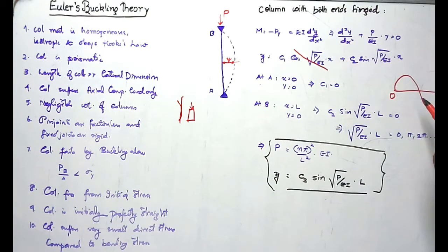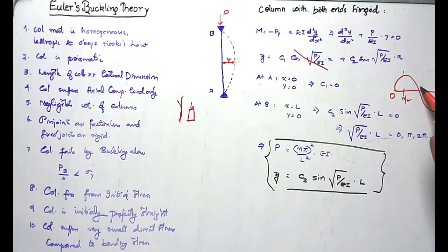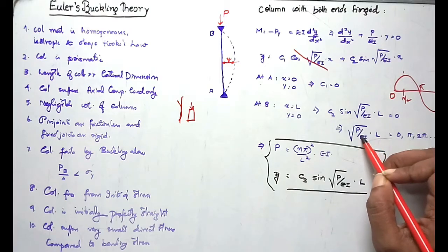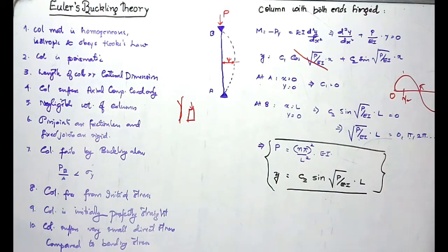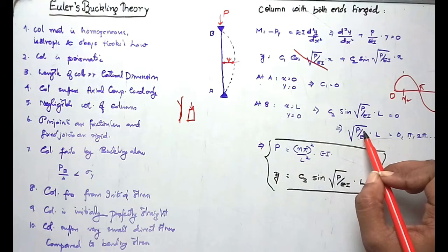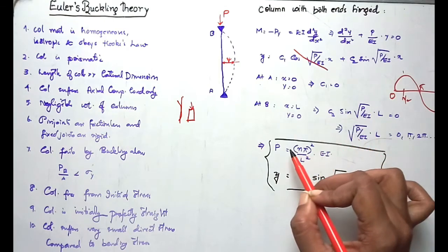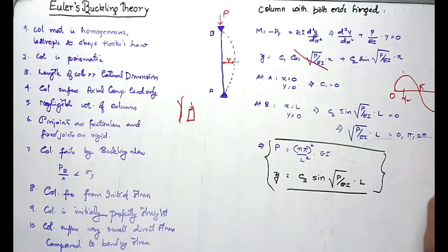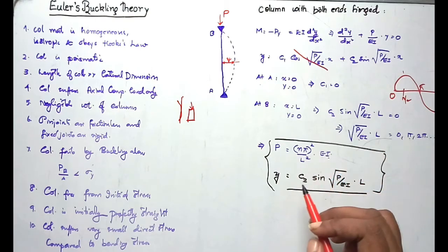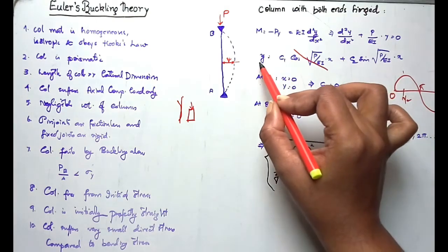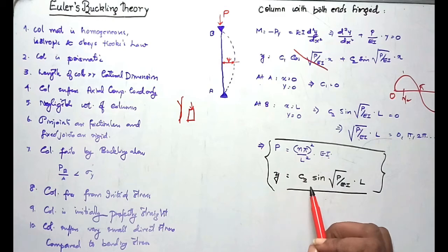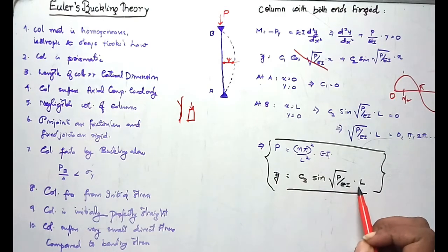At 0, the value of sin is 0; at π/2 it is 1; at π it is 0; at 2π it is again 0. So √(P/EI)·L = n·π, where n can be any integer. Therefore, the buckling load P = n²π²EI/L².